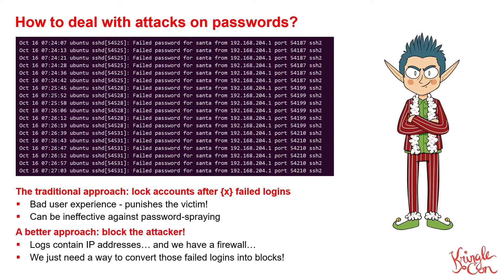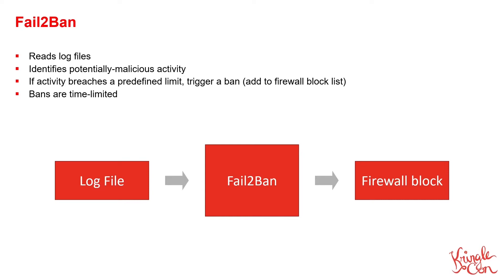After all, we know their IP address because it's here in the log files, and firewalls are a thing that exist. So can we not just find some clever way of converting these failed logins into firewall blocks to prevent any more malicious traffic from an offending IP address? Well, that's exactly what Fail2Ban does. It reads in log files and uses pattern matching to identify which lines relate to potentially malicious activity. If that activity breaches a certain limit, a ban is triggered — typically adding the offending IP address to a firewall block list for a certain period of time.